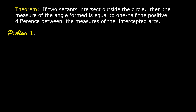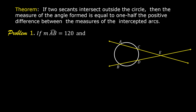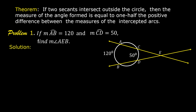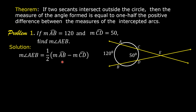Let us solve problem number one. If the measure of arc AB is 120 and the measure of arc CD is equal to 50, find the measure of angle AEB. Solution: based on this theorem, the measure of angle AEB is equal to one-half times the quantity measure of arc AB minus measure of arc CD.